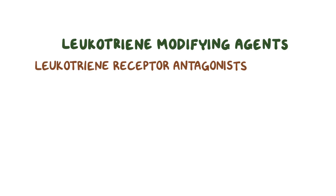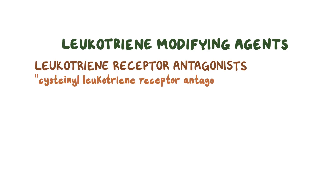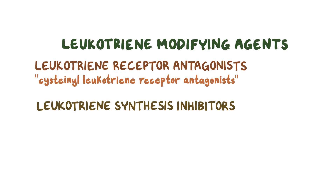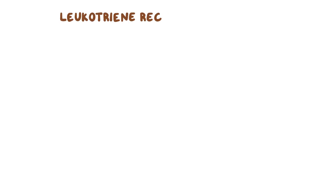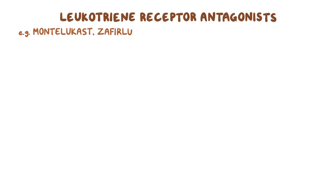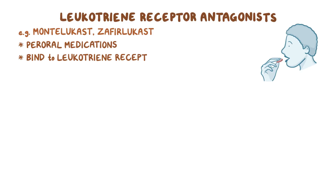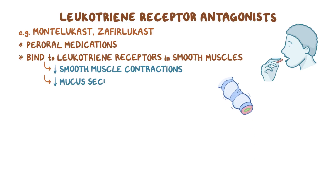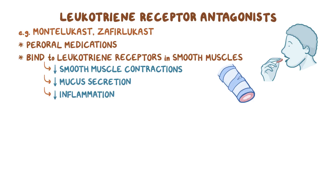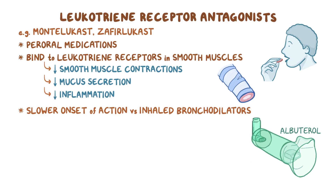Let's start with the leukotriene-modifying agents. These medications can be divided into two broad groups: leukotriene receptor antagonists, also known as cysteinyl leukotriene receptor antagonists, and leukotriene synthesis inhibitors, also known as 5-lipoxygenase inhibitors. Leukotriene receptor antagonists like montelukast and zafirlukast are peroral medications that bind to the leukotriene receptors in the smooth muscles of the respiratory airways and prevent leukotriene from binding. This weakens smooth muscle contraction in the respiratory tract, decreases mucus secretion, and reduces inflammation. Since they're taken peroral, they have a slower onset of action compared to inhaled bronchodilators like albuterol, which is why they're used for asthma prophylaxis and not during an acute asthma attack.